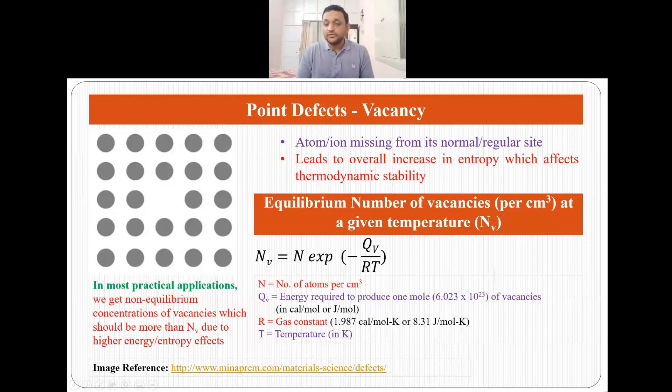But in most practical applications we do not get the equilibrium number of vacancies because it is not possible to obtain equilibrium at every step. That is why what we get is non-equilibrium concentration of vacancies, which should be more than Nv because of energy or entropy effects.